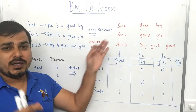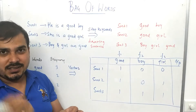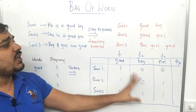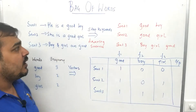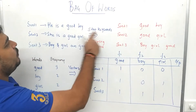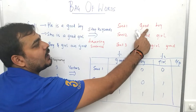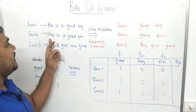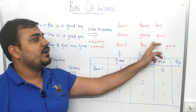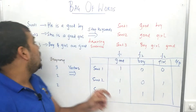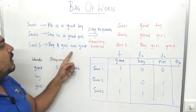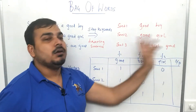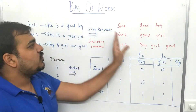If you don't know how to implement stop words removal, see my next video in the specific playlist — the link will be given in the description. After applying stop words to these sentences, sentence one becomes 'good boy' — 'he is a' is gone. Sentence two becomes 'good girl' — 'she is a' is gone. Sentence three becomes 'boy girl good' — 'and' and 'are' are removed.